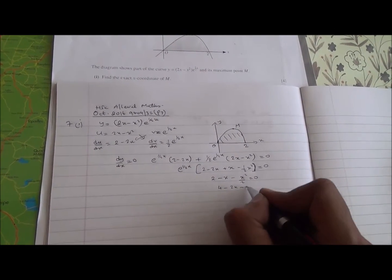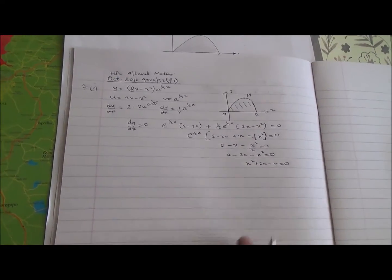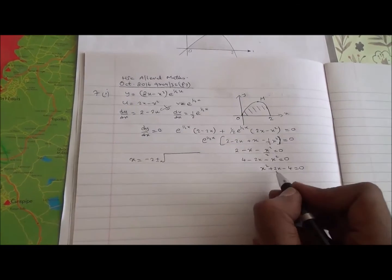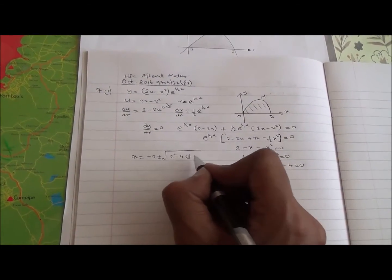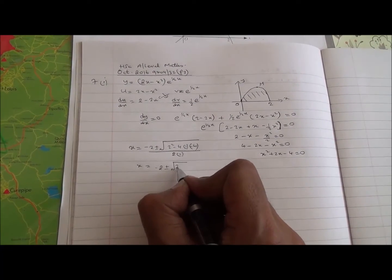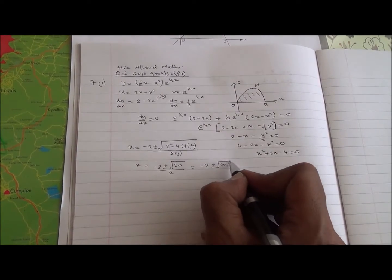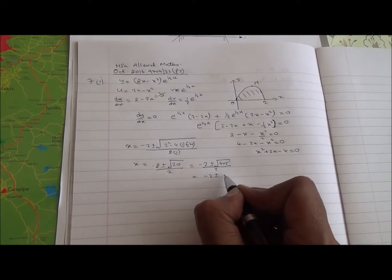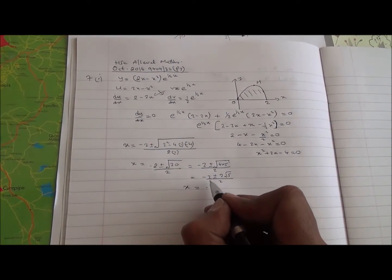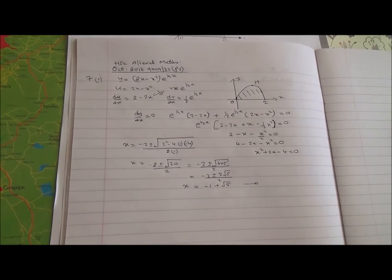So we have 4 - 2x - x² = 0, which rearranges to x² + 2x - 4 = 0. We solve this using the quadratic formula: x = (-2 ± √(4 - 4×1×(-4))) / 2 = (-2 ± √20) / 2 = (-2 ± 2√5) / 2. Taking the positive value, x = -1 + √5. This is the exact x-coordinate of point M.